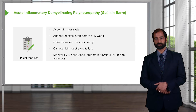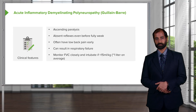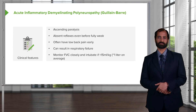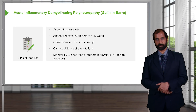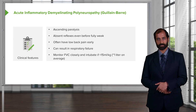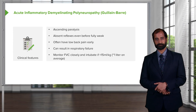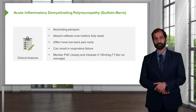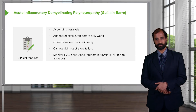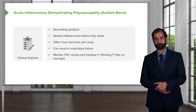Monitor your FVC closely. You've heard of pulmonary function tests — if you're suspecting Guillain-Barré, make sure the respiratory system is not being compromised by diaphragm involvement. Intubate if less than 15 milliliters per kilogram. That's important.